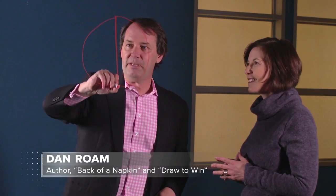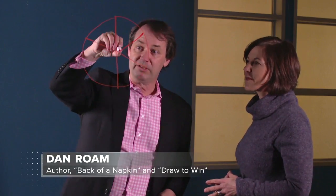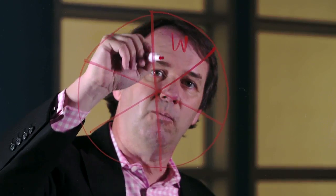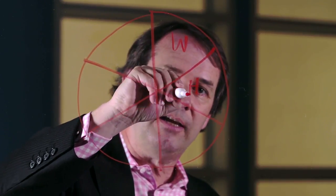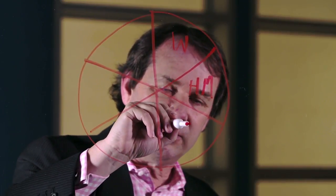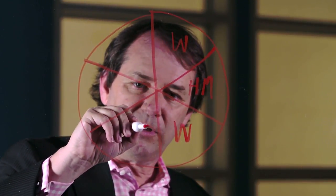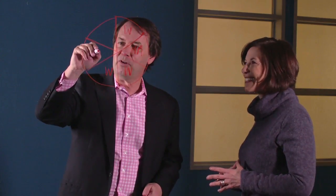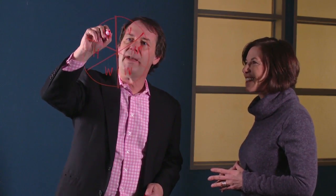We understand schematically how the visual mind works. This circle represents our brain — our visual engine — and we divide it into six slices, because vision actually works by dividing the world into six different types of information: who and what, how much, where, when, how, and why. This is kind of the six W's all over again.